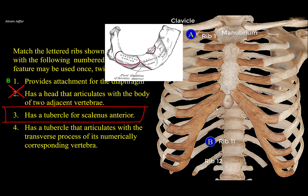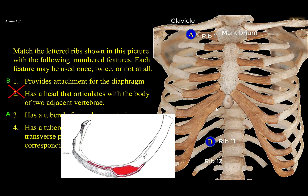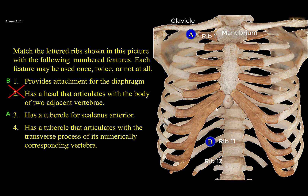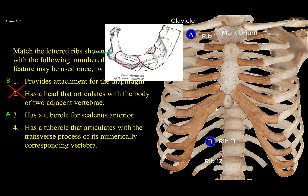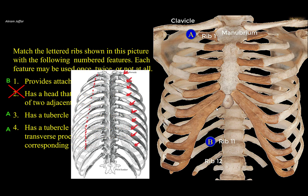Feature 3 — has a tubercle for scalenus anterior: this is a feature on the medial border of the first rib. The first rib provides attachment for scalenus anterior as well as scalenus medius, while the second rib provides attachment for scalenus posterior. Note that the second rib has a tuberosity, but it is for serratus anterior, not the scalenes. Feature 4 — has a tubercle that articulates with the transverse process of its numerically corresponding vertebra: ribs 11 and 12 do not have a tubercle for a transverse process; they only articulate with the body of the vertebra. But rib A, the first rib, has a tubercle that articulates with the transverse process of T1. The tubercle of the first rib coincides with the angle of the rib, but from this level down, the angle gradually moves laterally away from the tubercle.